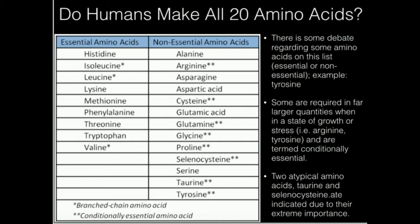Hopefully that makes sense. In general, we're going to say there are basically about 10 essential amino acids and 10 non-essentials. You'll notice there are two extras shown here: selenocysteine and taurine. These are other amino acids not found in proteins, but they're particularly important for supporting healthy life.